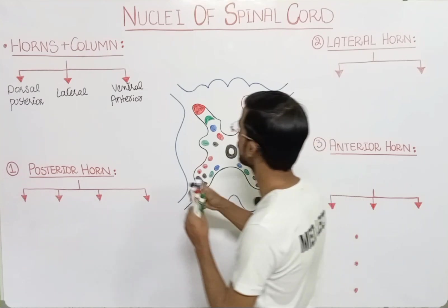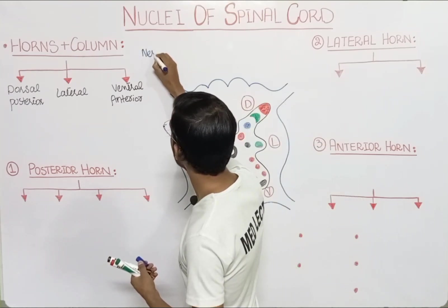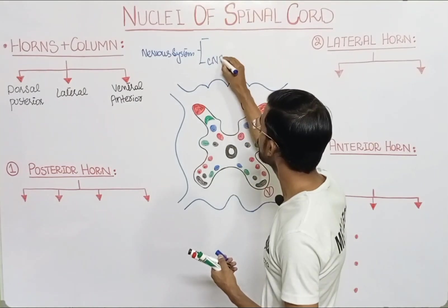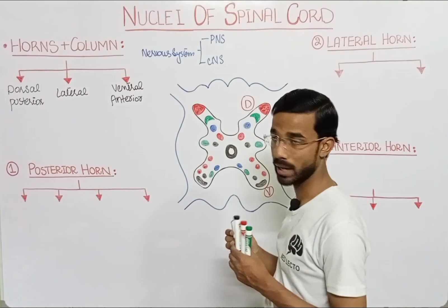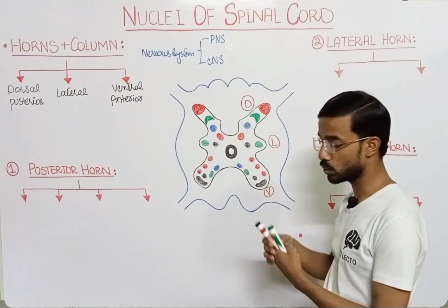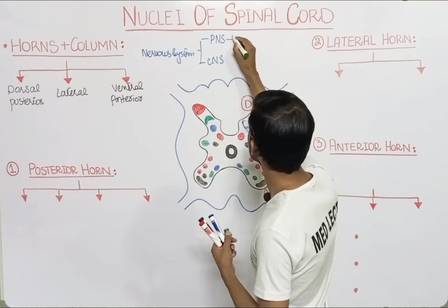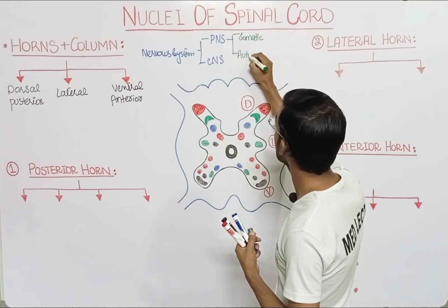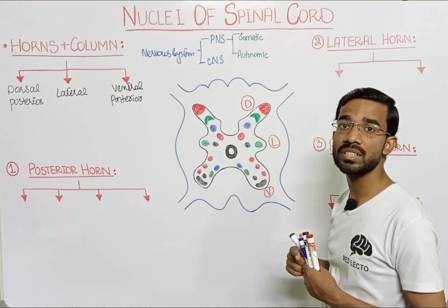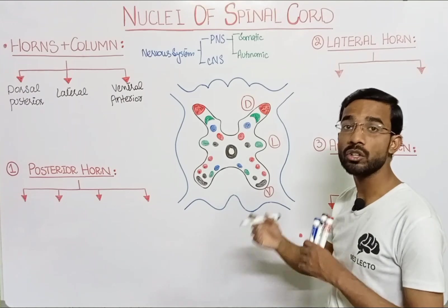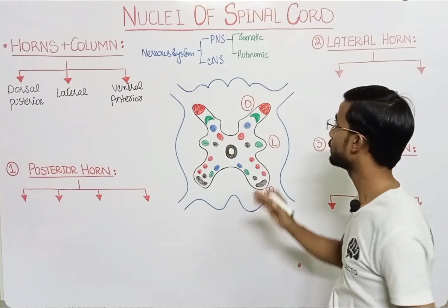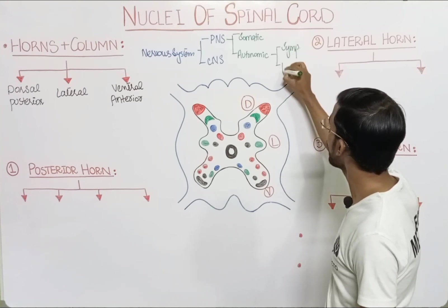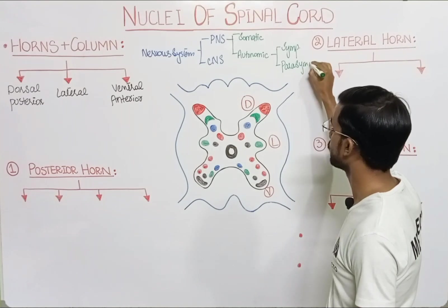The nervous system is divided into two components: the central nervous system and the peripheral nervous system. Within this, we have the somatic nervous system and the autonomic nervous system. The somatic nervous system is voluntary, and the autonomic nervous system is involuntary — not in our control. The autonomic nervous system is further categorized into the sympathetic and the parasympathetic nervous system.